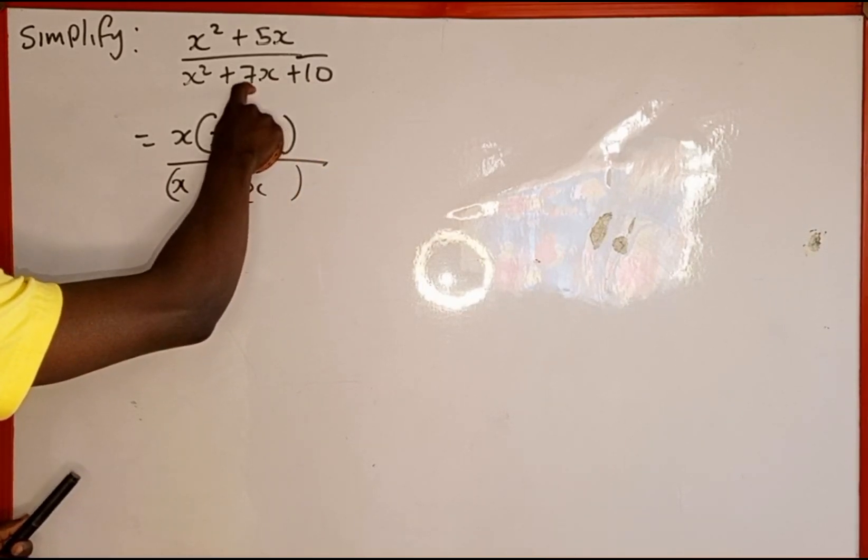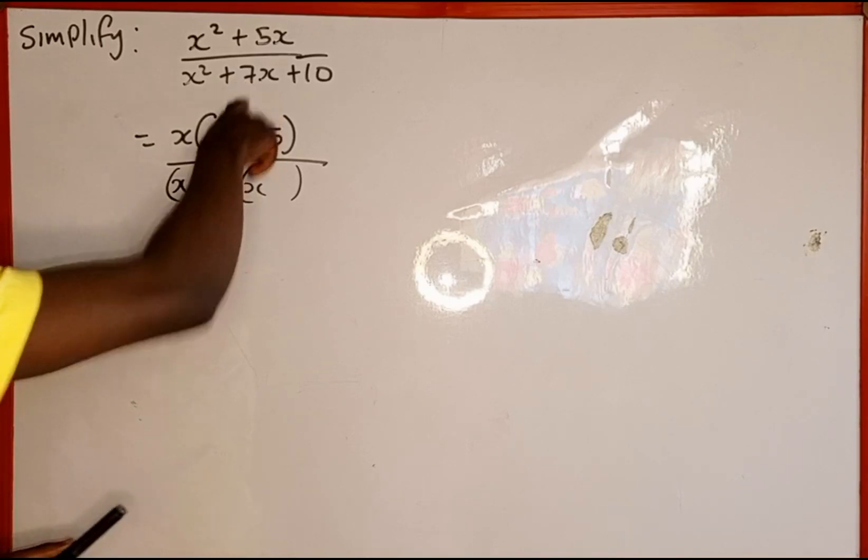And when we add the two numbers together, it is going to give us this coefficient of x, which is 7.